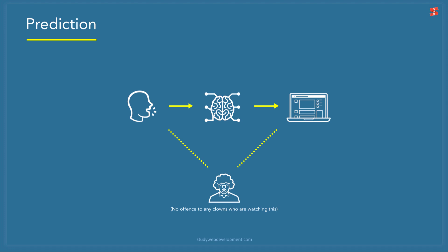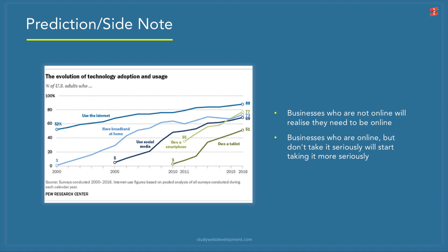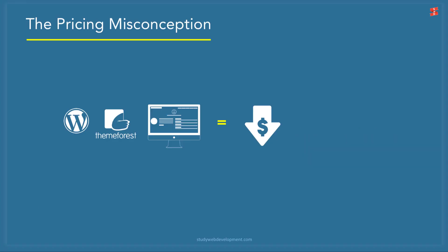Take a look at this chart — internet usage has grown from 52% to 88%, and that 88% figure is already two years old. Two key takeaways: businesses not online will realize they need to be, and businesses already online but not taking it seriously will start doing so. Takeaway one: businesses will need developers to help them create or improve their websites. Takeaway two: be the go-to person in a niche that businesses come to for solutions.